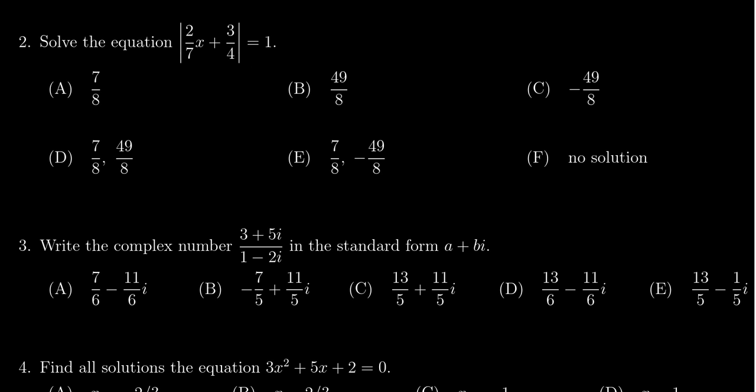Whenever you have an absolute value equal to something, we have to check the sign on the other side. If you have absolute value equal to some negative number like negative two, you would end up with no solution. If you have absolute value equal to zero, you'd only end up with one solution. We would handle those exceptional cases if they occurred.